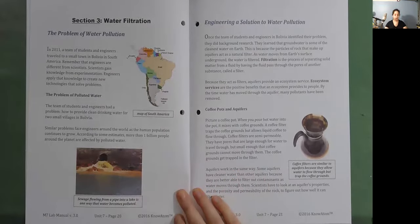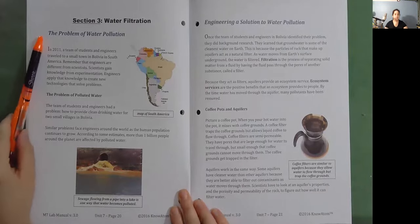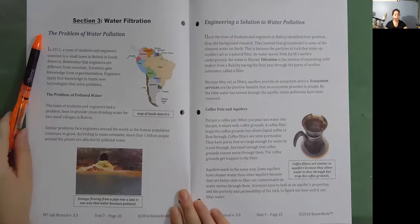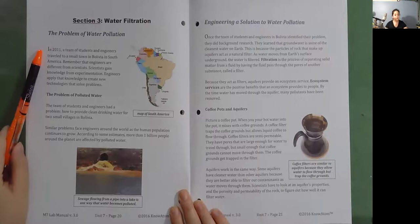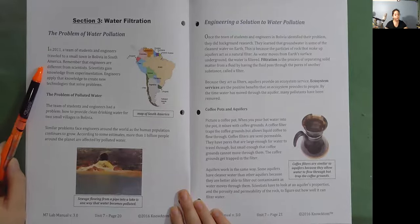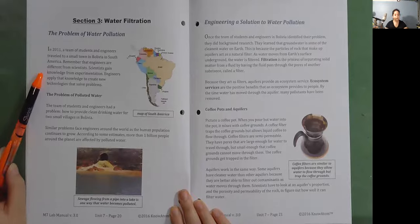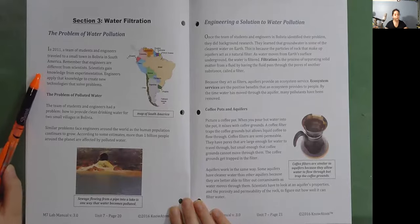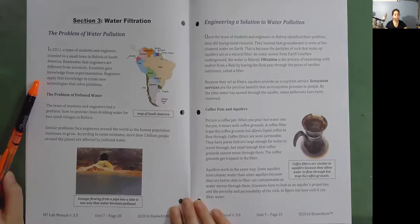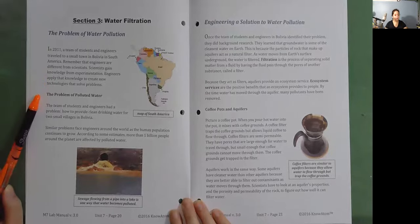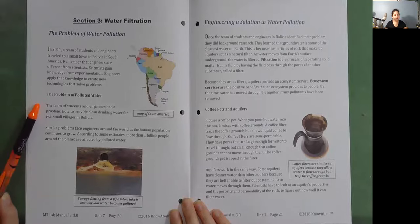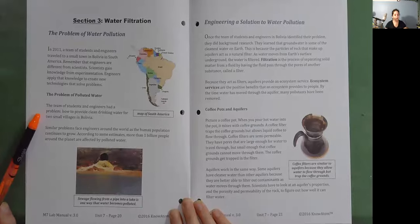Section 3: Water Filtration. The Problem of Water Pollution. In 2011, a team of students and engineers traveled to a small town in Bolivia in South America. Remember that engineers are different from scientists. Scientists gain knowledge from experimentation. Engineers apply that knowledge to create new technologies that solve problems. The Problem of Polluted Water. The team of students and engineers had a problem: How to provide clean drinking water for two small villages in Bolivia. Similar problems face engineers around the world as the human population continues to grow. According to some estimates, more than one billion people around the planet are affected by polluted water.